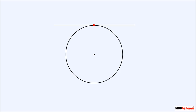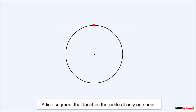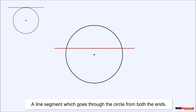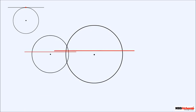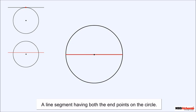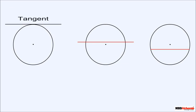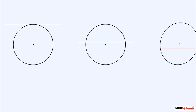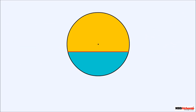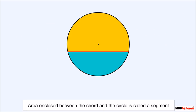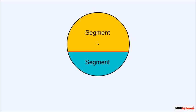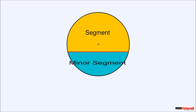We now have three cases: a line segment that touches the circle at only one point, a line segment that goes through the circle from both ends, and a line segment having both end points on the circle. The first is called a tangent, the second is called a secant, and the third is called a chord. The chord divides the interior of the circle into two parts. The area enclosed between the chord and the circle is called a segment — the smaller one is the minor segment and the larger one is the major segment.